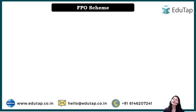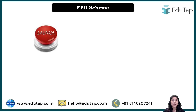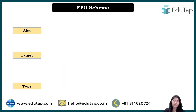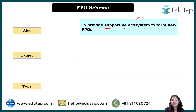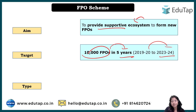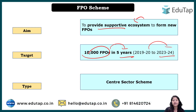Now let's understand the basics of the scheme. The launch year is 2020 — specifically February 2020 — and it was launched from Chitrakoot, Uttar Pradesh. It falls under the Ministry of Agriculture and Farmers' Welfare. The aim is to provide a supportive ecosystem to form new FPOs. The target is to produce 10,000 FPOs in five years, so from 2020 to 2024 is the five-year time duration.